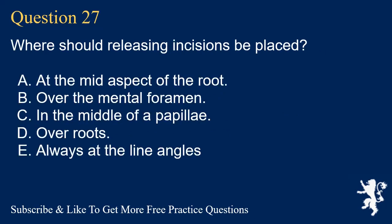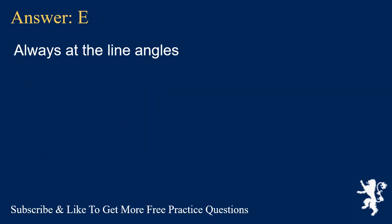Question 27. Where should releasing incisions be placed? A. At the mid aspect of the root. B. Over the mental foramen. C. In the middle of a papilla. D. Over roots. E. Always at the line angles. Answer: E. Always at the line angles.